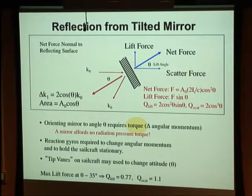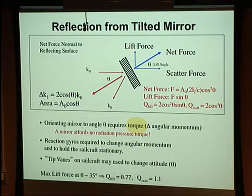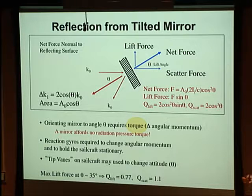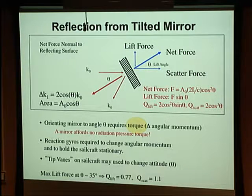There are two force components. The scattering force along the sun line has efficiency Q_scatter = 2cos³θ. The perpendicular component — the lift force — has efficiency 2cos²θ sinθ. To produce this lift force, which is what you really use to navigate, you have to torque the entire sailcraft. How do you torque something in space? A flat mirror gets no natural torque from the sun, so you have to do something to reorient the craft. One of the things we're interested in is how you can do this with sunlight alone, not with mechanical or other means.